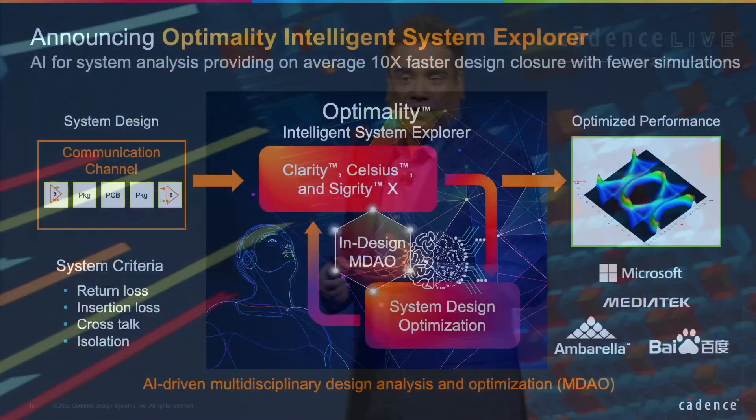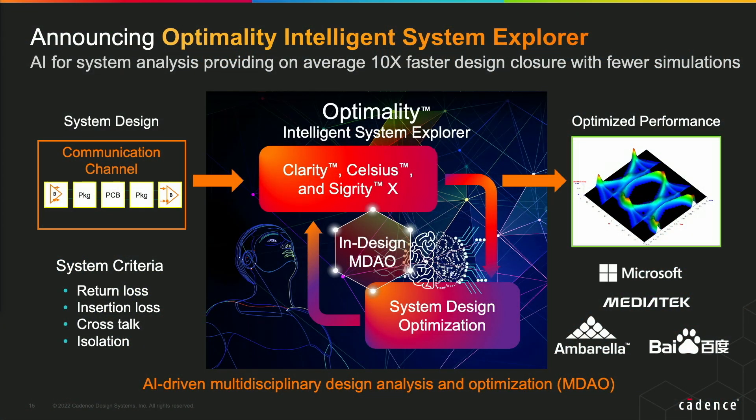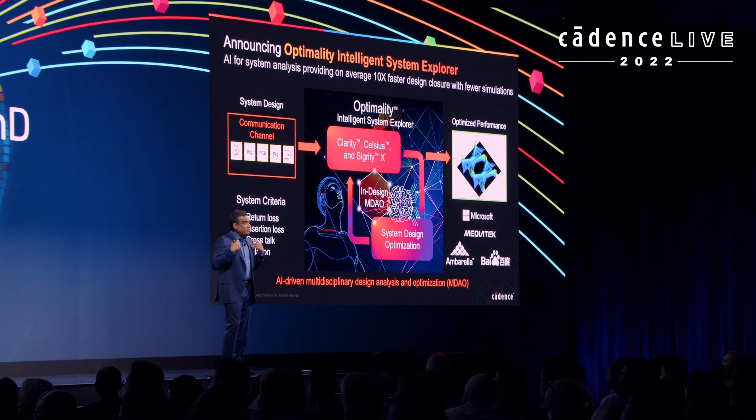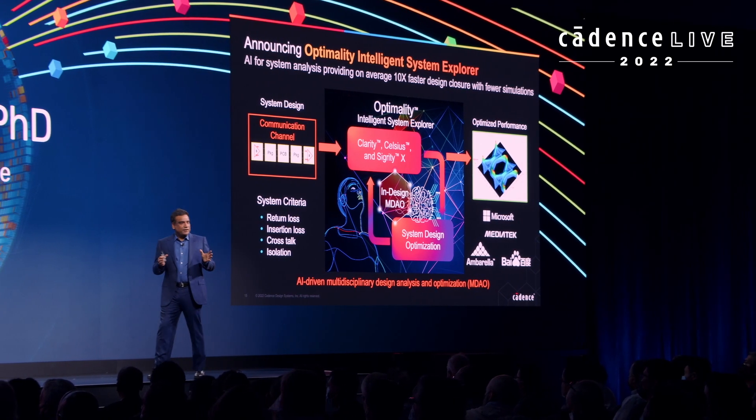But in the end, what the designers want, whether it's at the chip level or at the system level, they want to optimize. They want to find out what should be the shape of the wing or the parameters of a high-frequency channel that minimizes some variable, or makes the wing or the car more aerodynamically efficient. So this same technology in Cerebris can be applied, I believe, for the first time to the system design space.